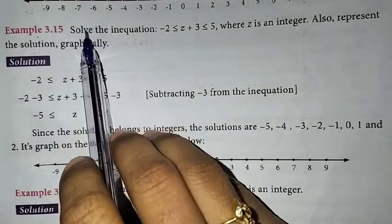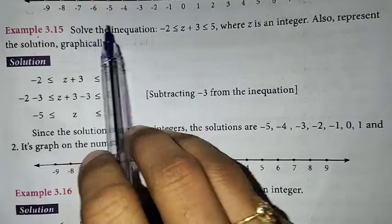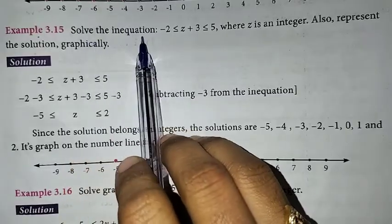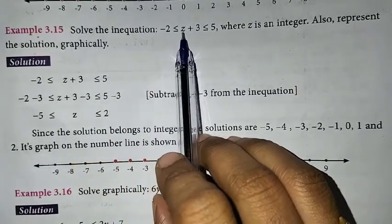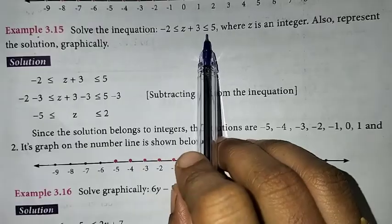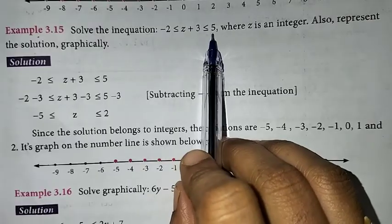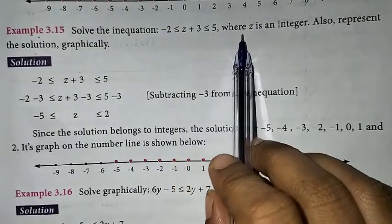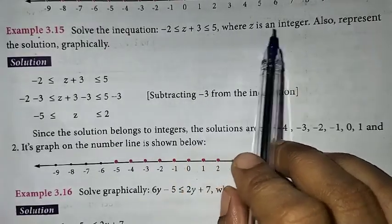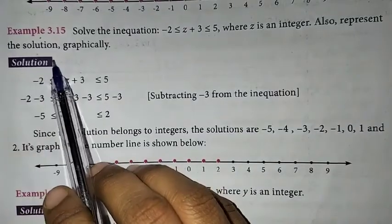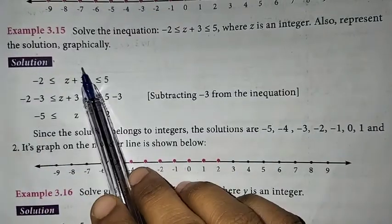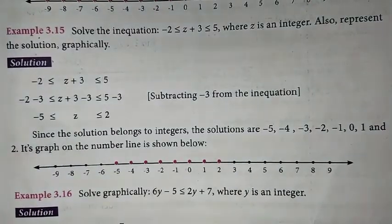In the problem, solve the equation: minus 2 less than or equal to z plus 3 less than or equal to 5, where z is an integer. Also represent the solution graphically — that is, the number line will represent the solution.